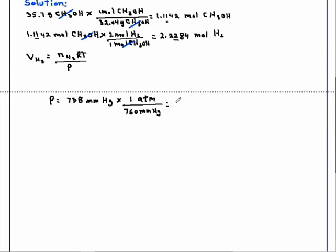This gives us a pressure of 0.97105 atmosphere. A number that is good to the third significant figure. Now we can substitute and solve for the volume of hydrogen.